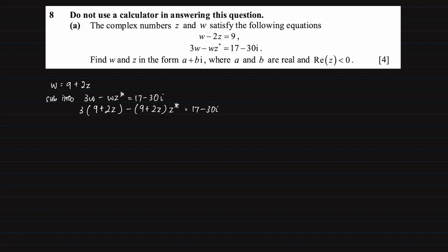Now intuitively we'll need to simplify this statement which gives us 27 + 6z - 9z* - 2zz* equals 17 minus 30i.